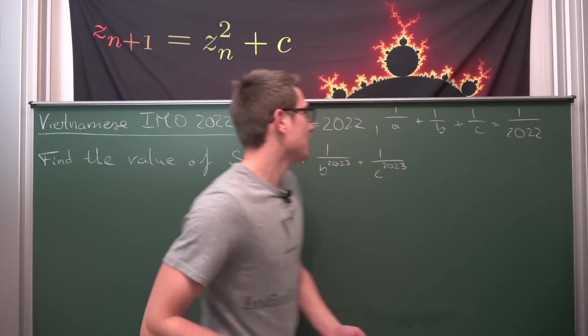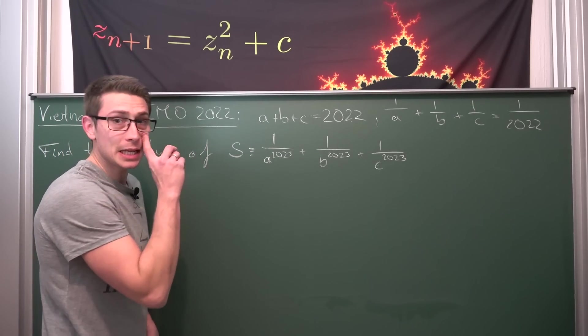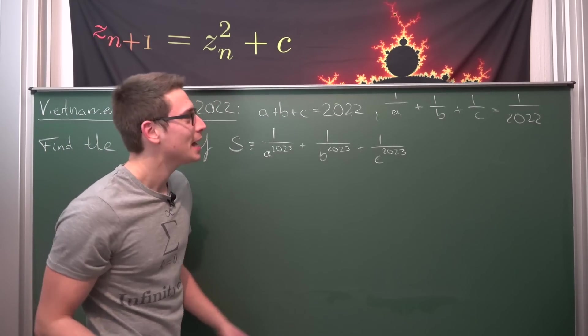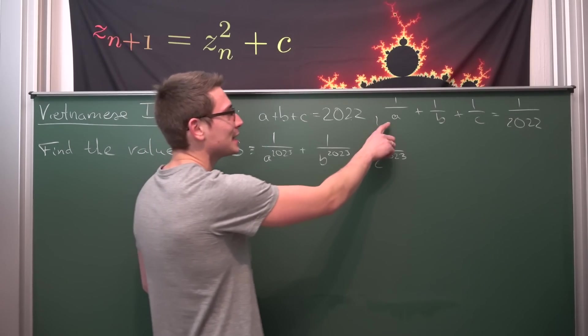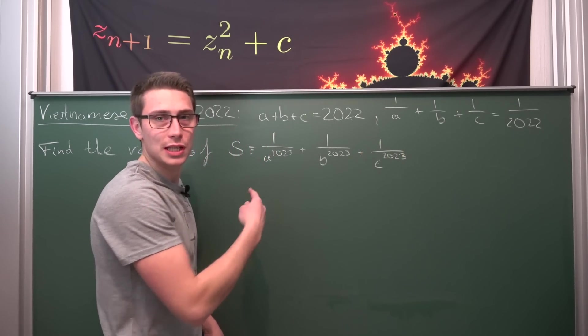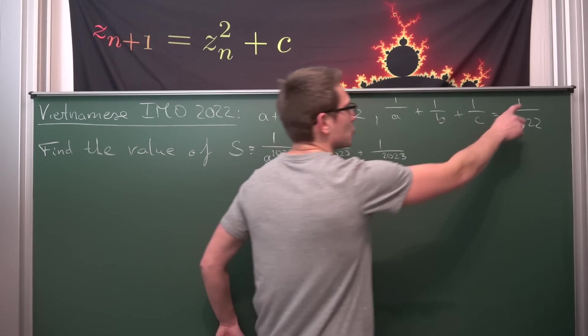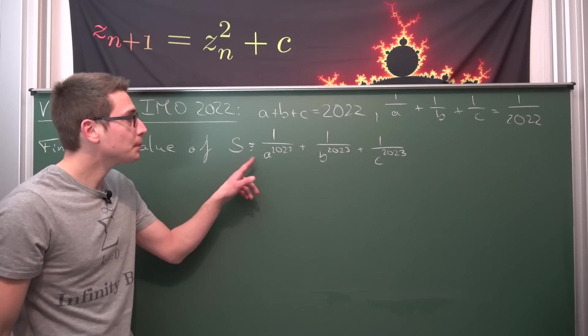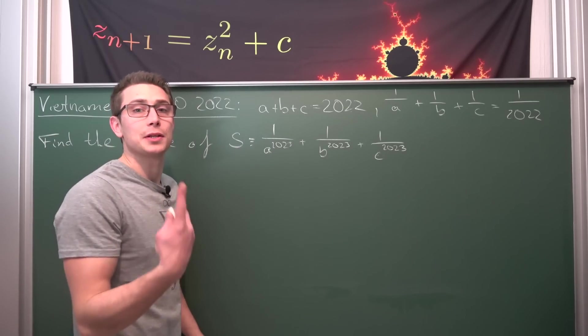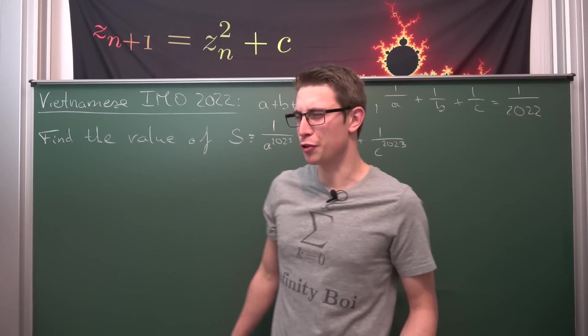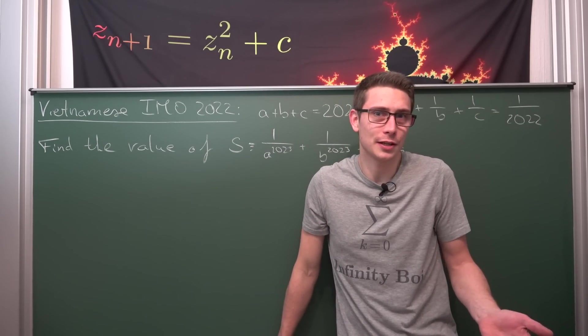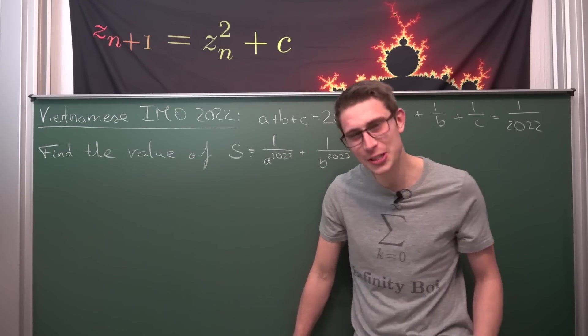Now what's the quest here? We have given A plus B plus C being equal to 2022. All the year numbers for those mathematical olympiads and all the reciprocals of those ABCs added together give us 1 over 2022. And what we need to find is the sum of all the reciprocals but raised to the 2023 power. Yeah that's the quest. Try it out for yourself and if you're done keep watching the video for the solution.